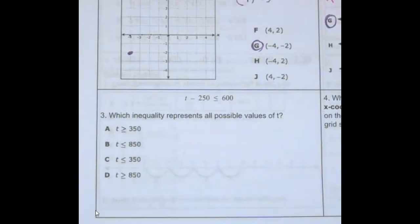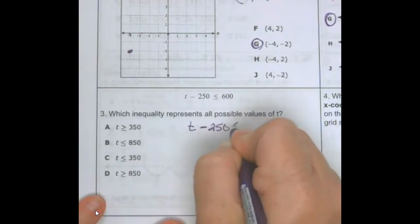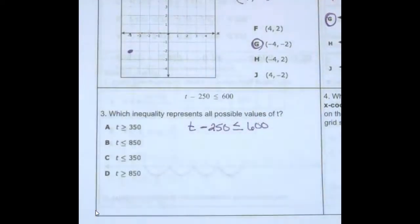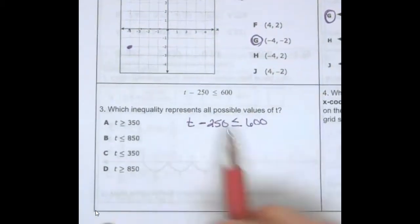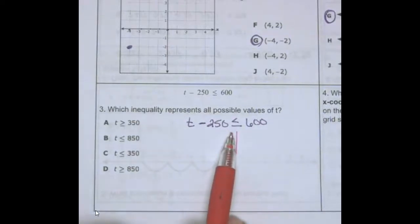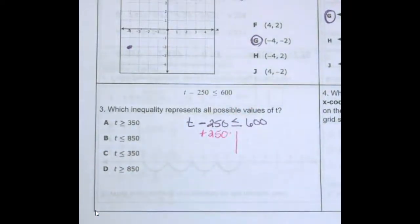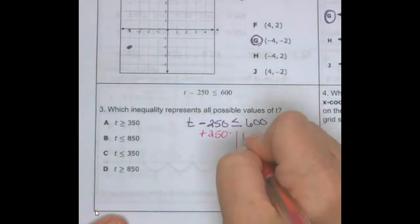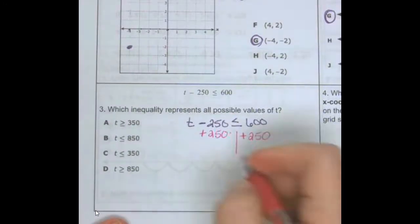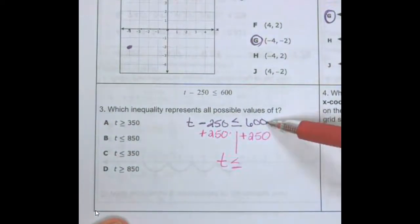Number three: which inequality represents all possible values of T? I'm going to rewrite it so I have room to solve. I have negative 250 plus T. I need to isolate T, so I need to get rid of the negative 250 by adding positive 250 to both sides. This gives me T is less than or equal to 600 plus 250.